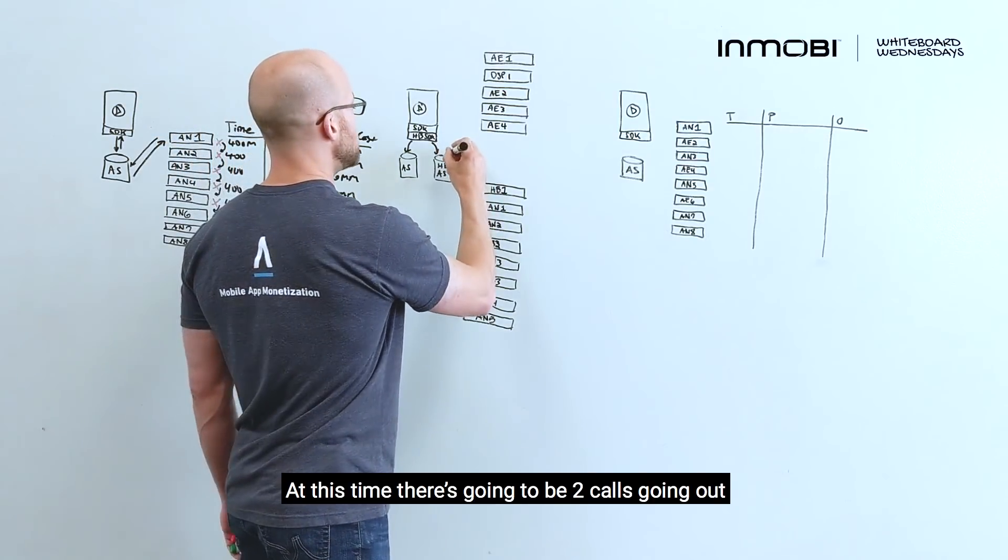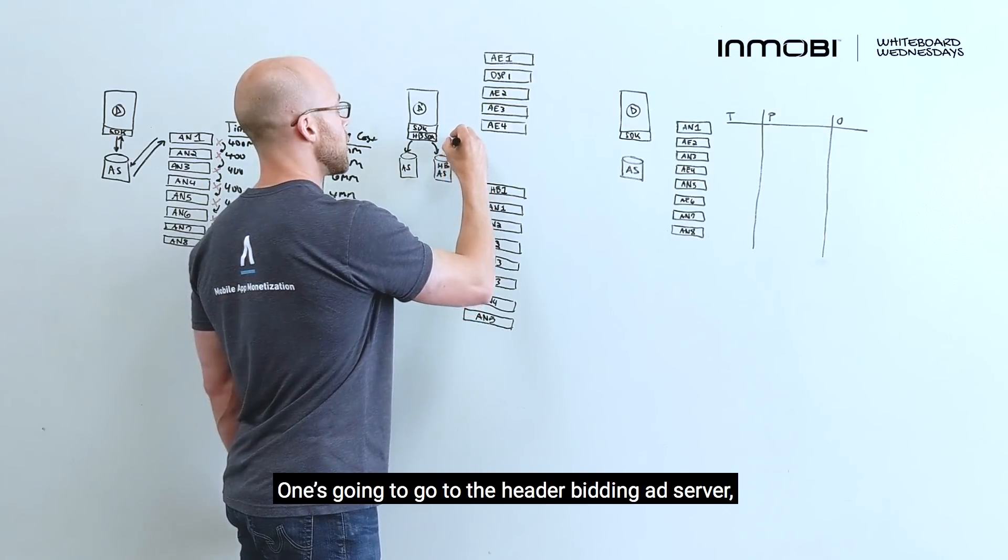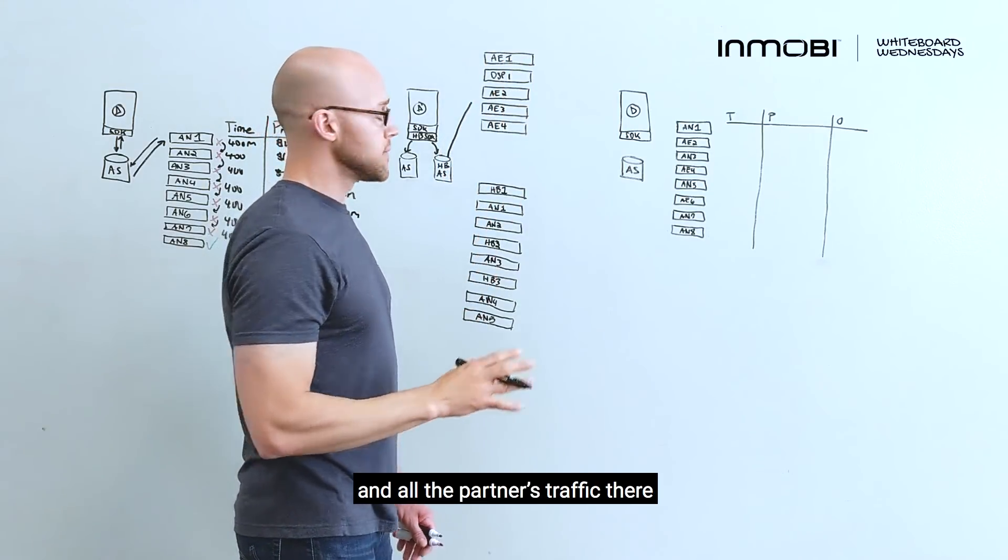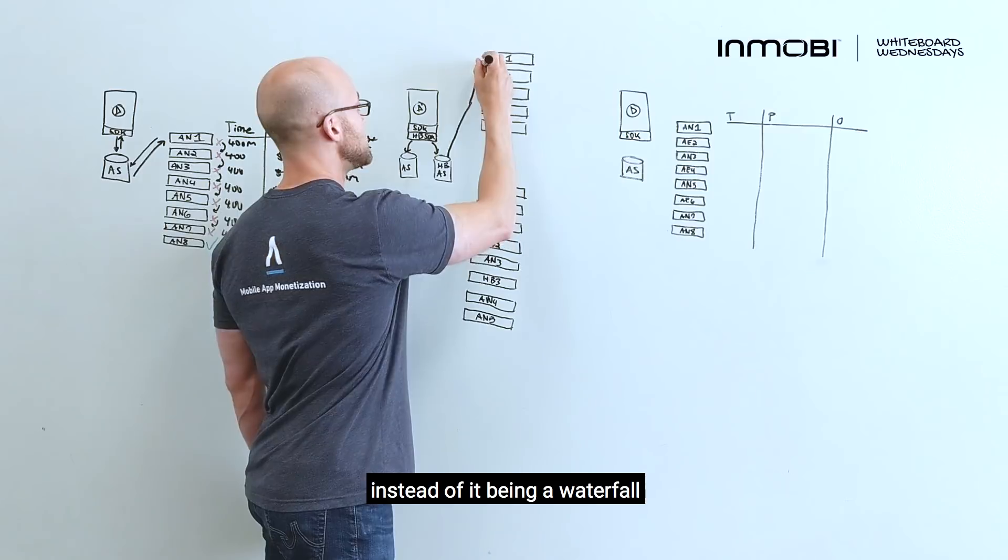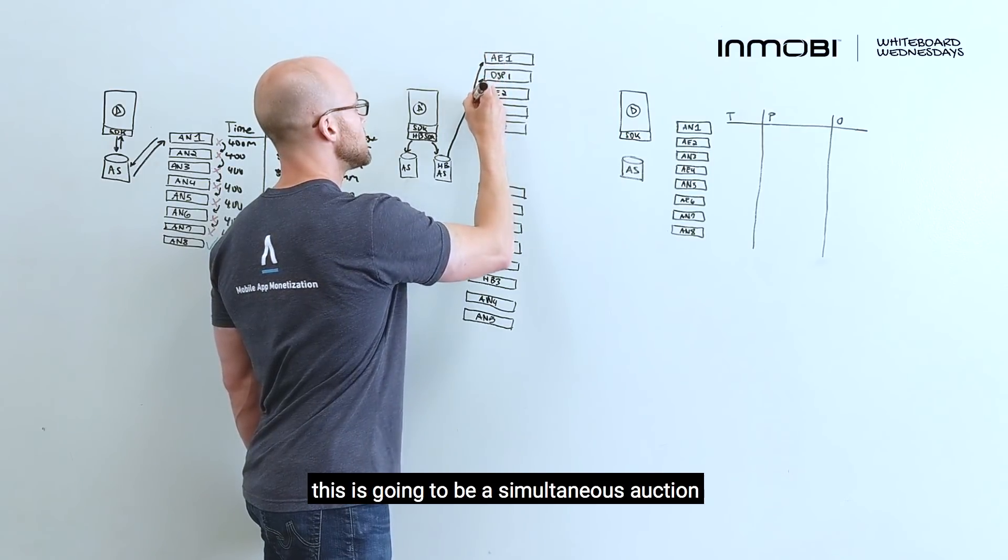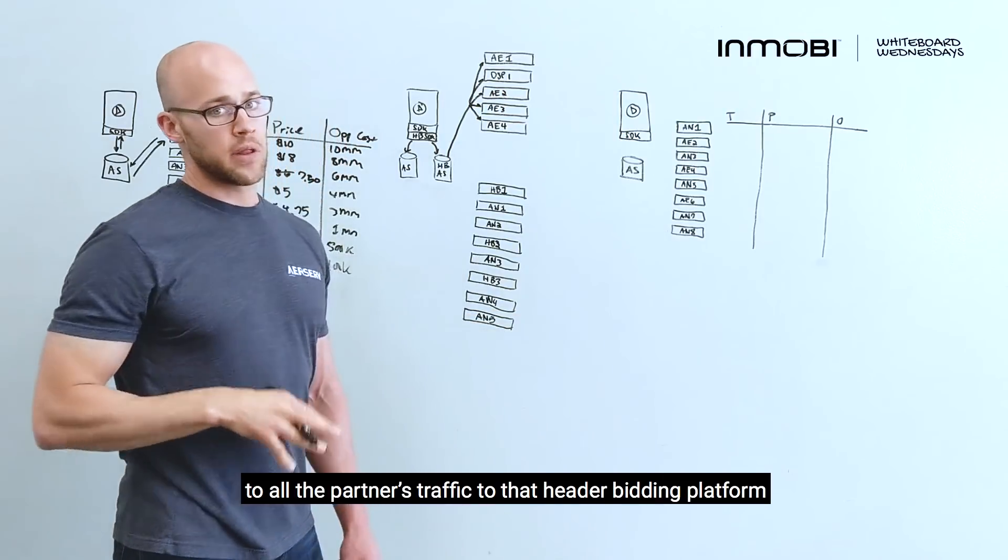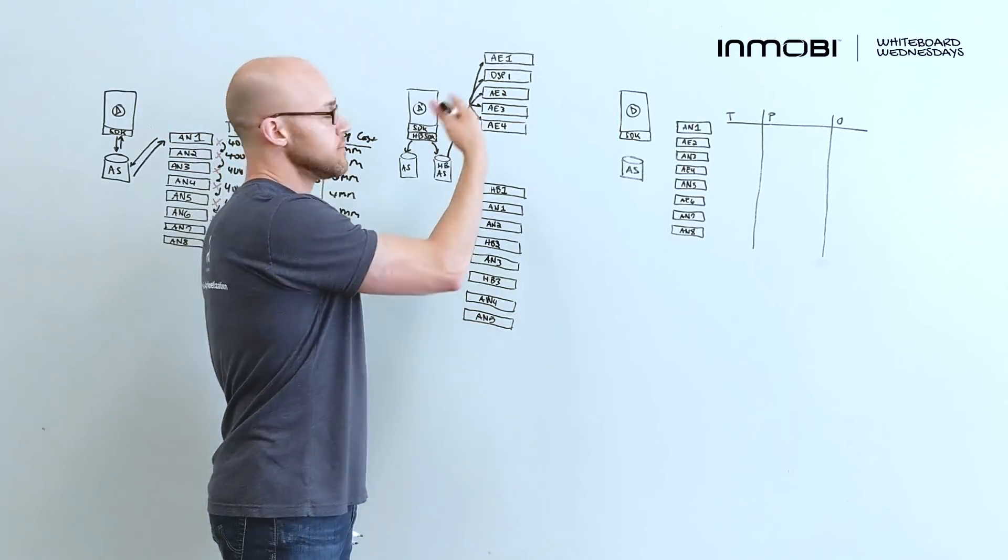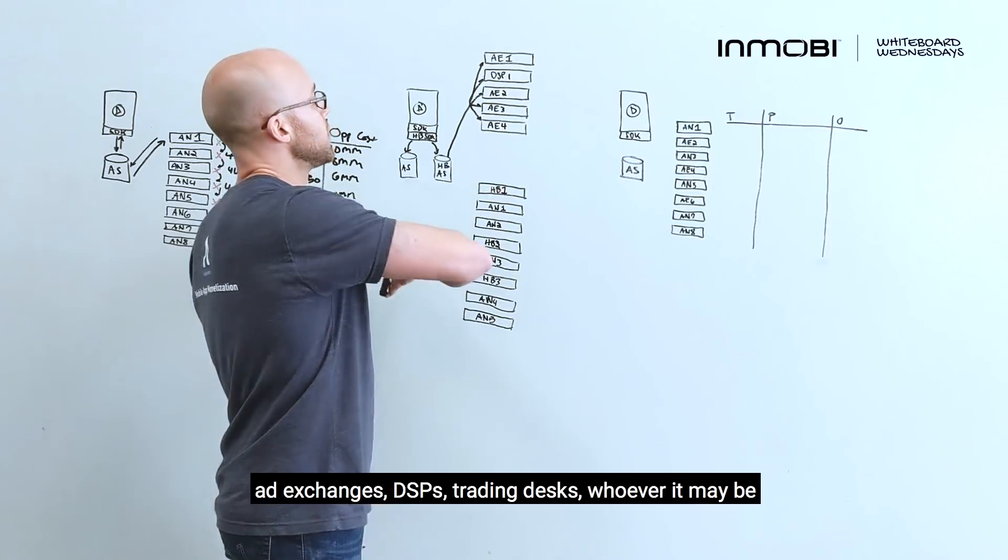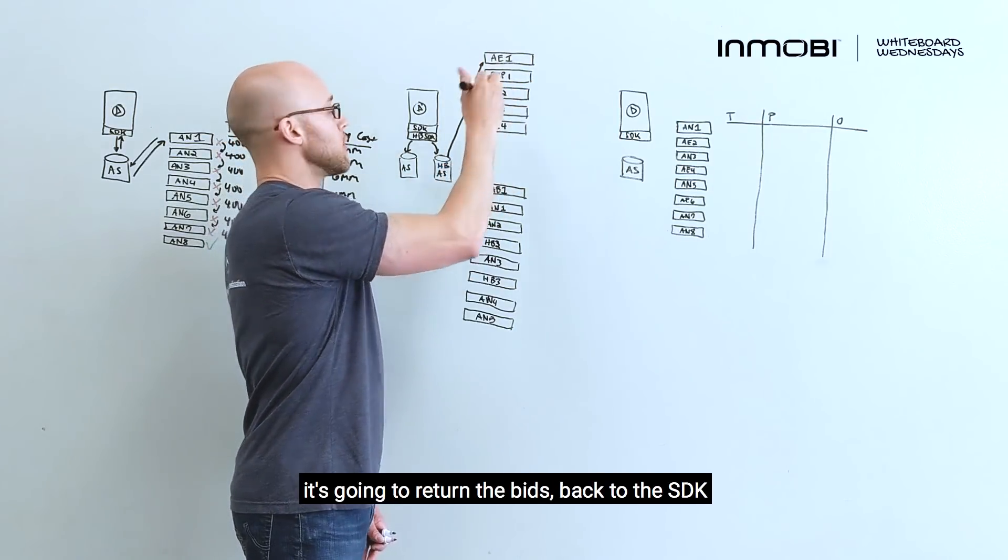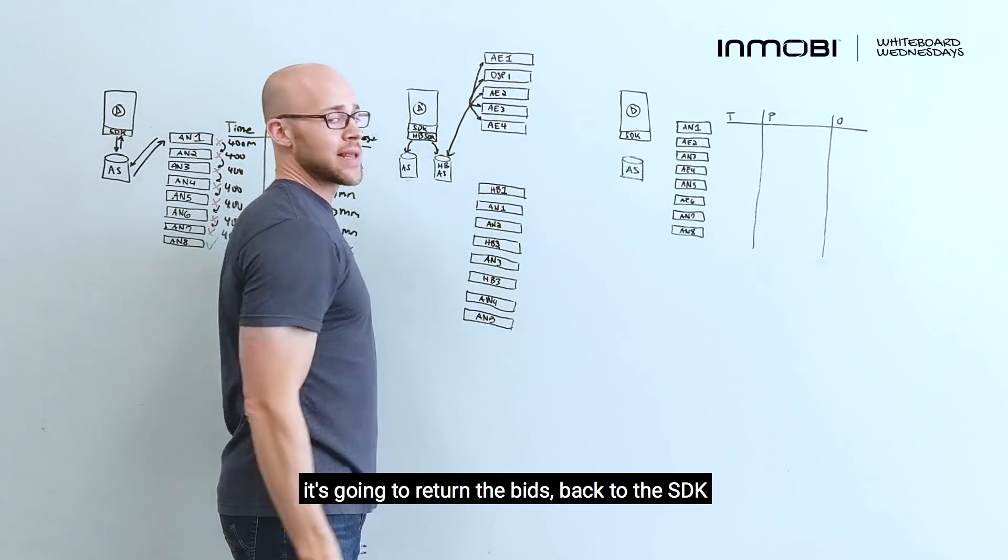At this time, there's going to be two calls going out. One's going to go to the header bidding ad server, and all the partners traffic there. Now, the nice part is, instead of it being a waterfall, this is going to be a simultaneous auction to all the partners trafficked within that header bidding platform. Ad exchanges, DSPs, trading desks, whoever it may be, there's going to be a simultaneous call go out, it's going to return the bids, back to the SDK.